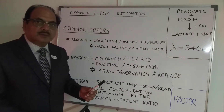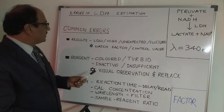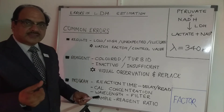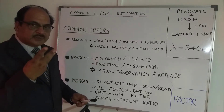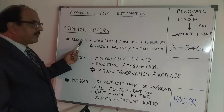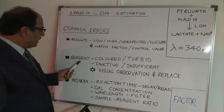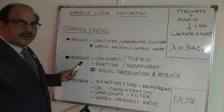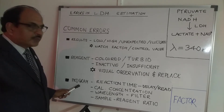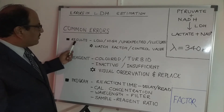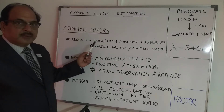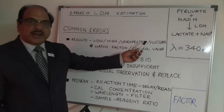Decrease in absorbance is the measure of LDH activity. Now, the common errors in LDH estimation are categorized into three types: Type 1 is result-oriented, Type 2 is reagent-oriented, and Type 3 is program-oriented.